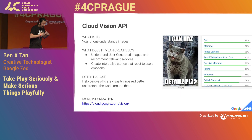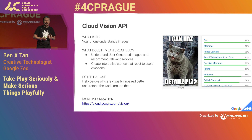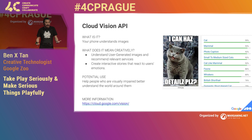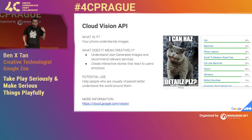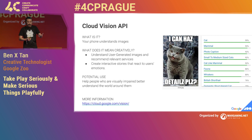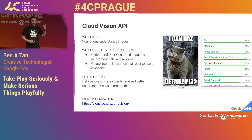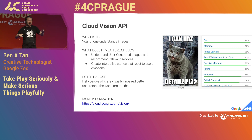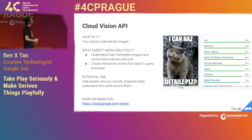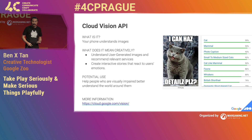Next I want to talk about vision — what if the machine could see things and understand the world? Cloud Vision API is part of Google Cloud: you give it an image, say a photo of this room, and it gives you back information about what's in it — people, crowd, camera, hall, light — along with a percentage confidence rating of what it thinks each object is.